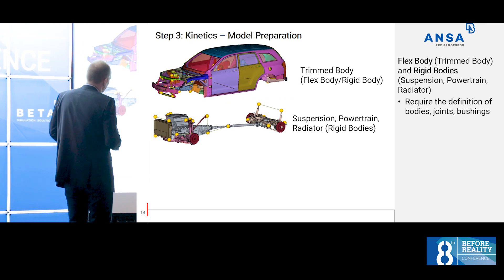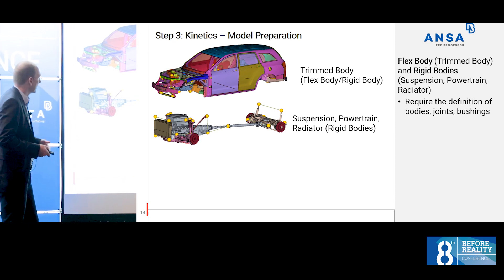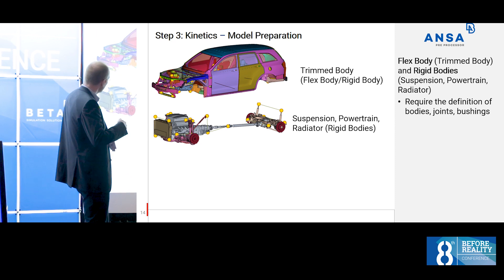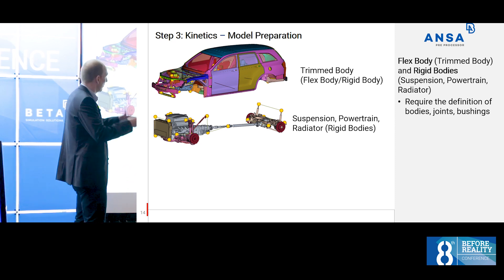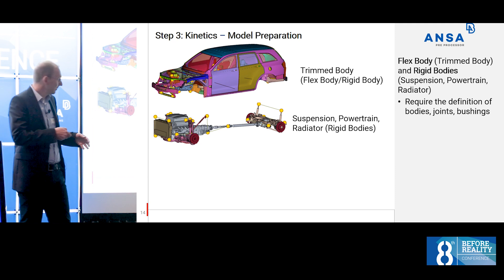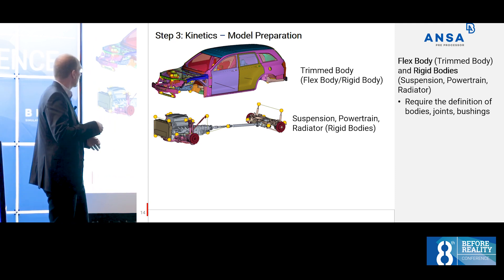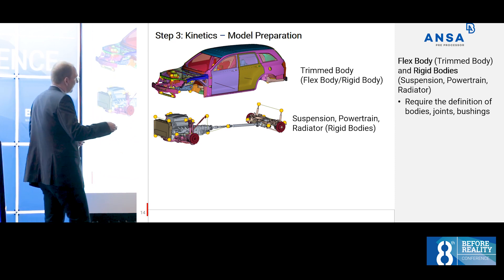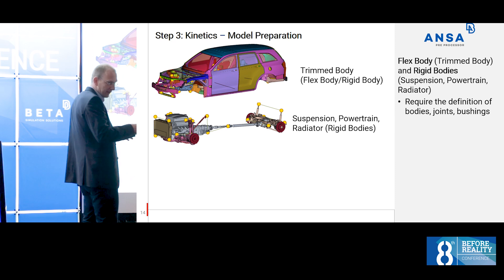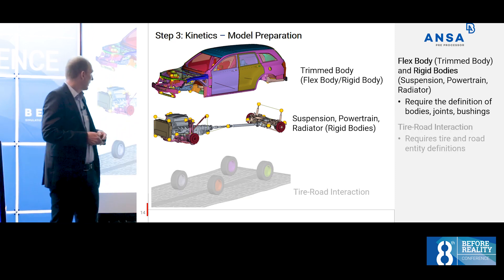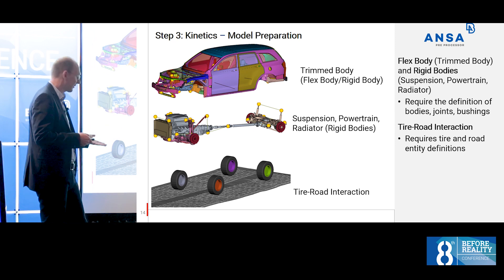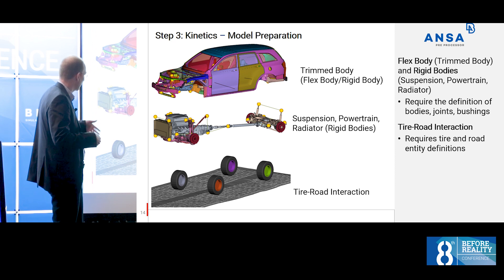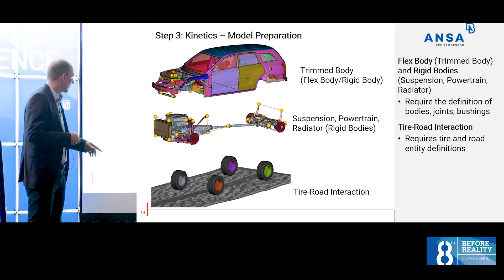Coming to kinetics: in ANSA kinetics we do the multi-body dynamic calculation. We have to define the bodies — the trim body and the other parts — where the trim body is flexible and the other parts are rigid. We also have to define how they are connected, with joints and bushings. On top of that, we need to define the road and the tires. We can build roads in ANSA kinetics and create tires.